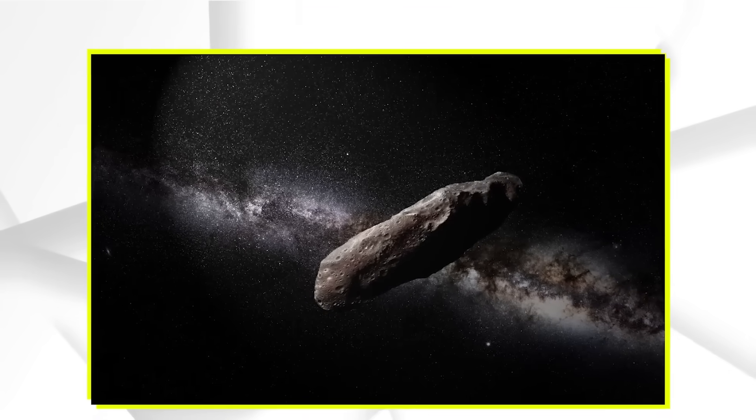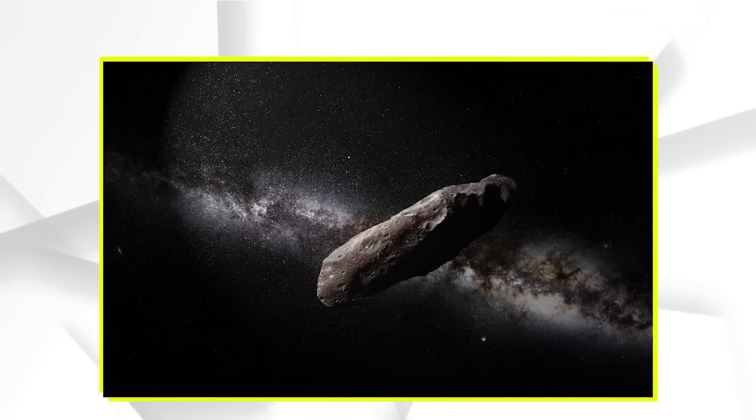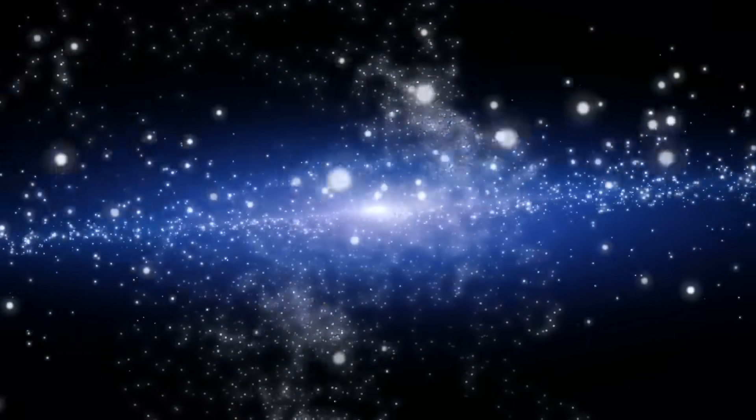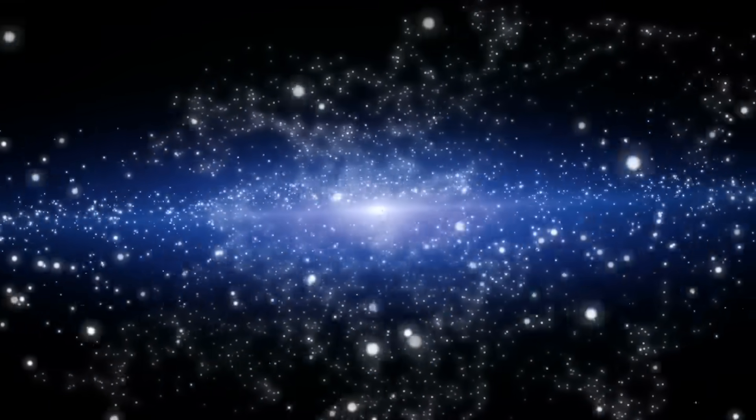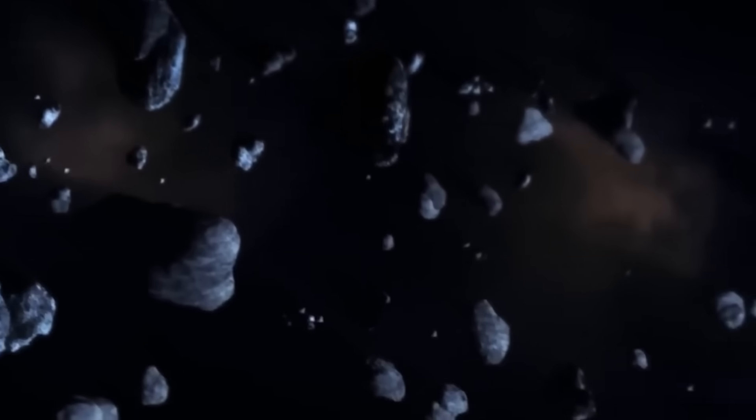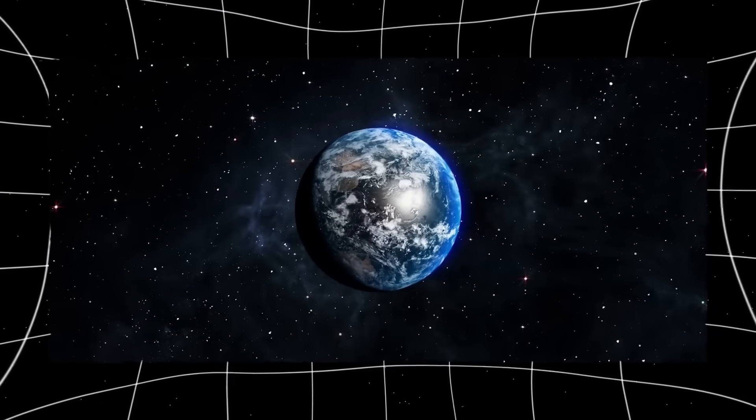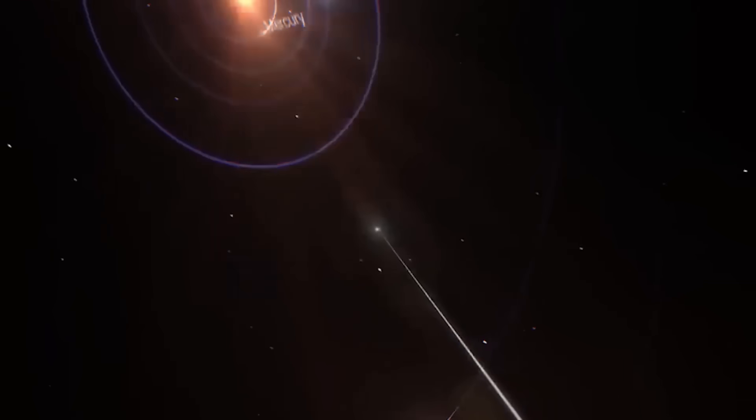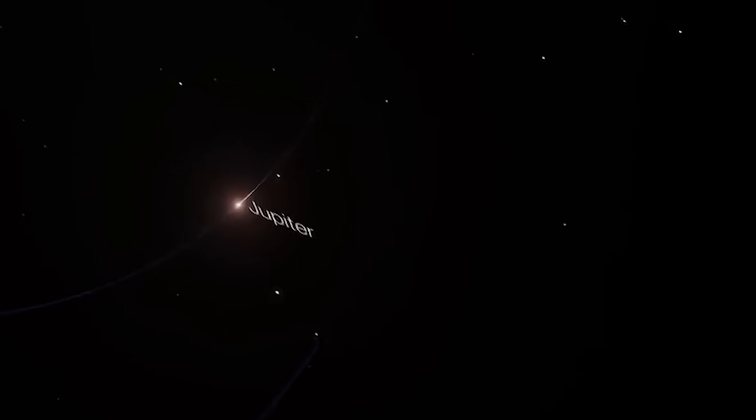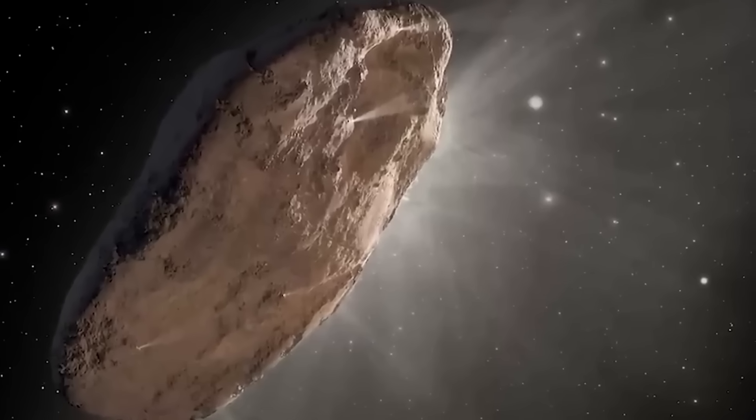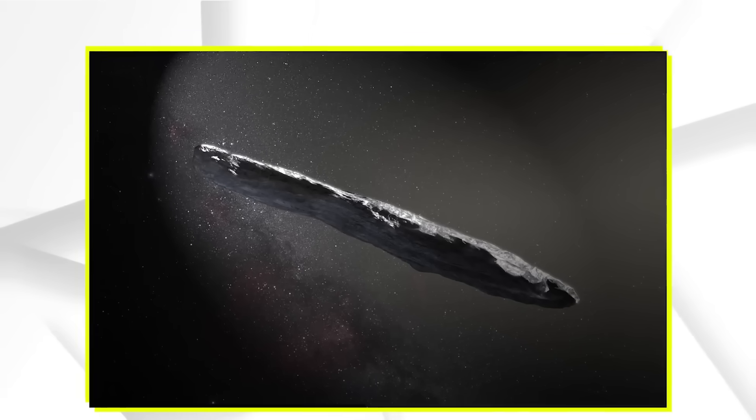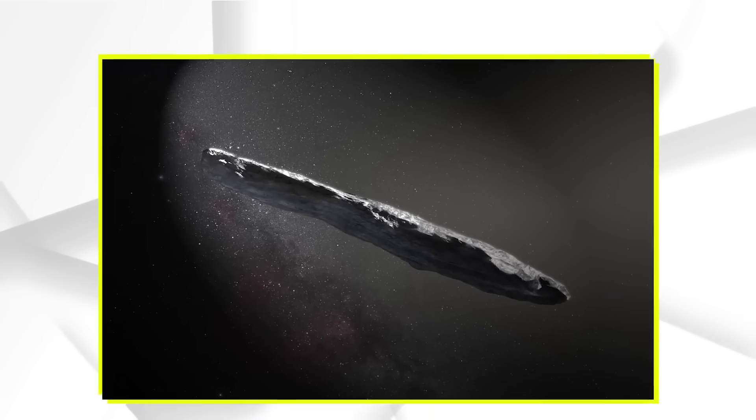Oumuamua came and went in 2017, leaving behind a riddle. Now it has returned, not as a lone wanderer, but as the centerpiece of a cosmic procession that moves without speaking, without warning, and without fear. It has not flashed its lights. It has not knocked on Earth's door. And yet, it has changed everything. This isn't just an astronomical anomaly. It's a shift in how we see the universe, and ourselves. For centuries we have looked to the stars and asked if we are alone. But what if the stars have been watching all along? What if they've already sent their answer, and we're only now beginning to understand the language? The synchronized motion. The silence. The precision. It all points to something we aren't ready to explain.